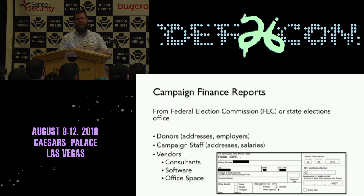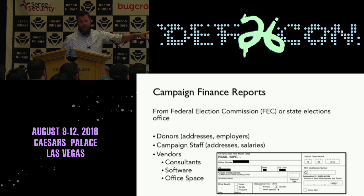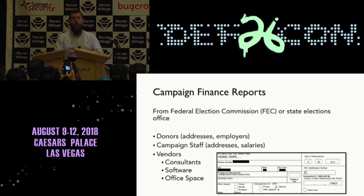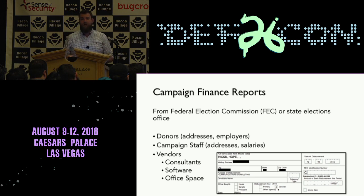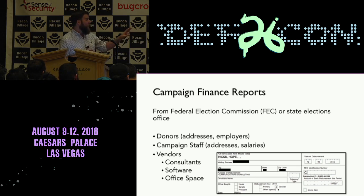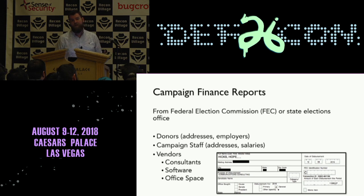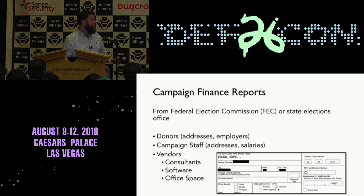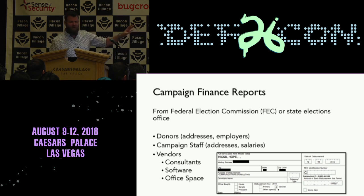Campaign finance reports: any candidate running for public office is going to have a campaign committee, which has to report every dollar coming in and out. You can go to the Federal Election Commission or the state elections office to get these records — almost every state has them online. Some even have really great search tools. The FEC has an API so you can pull this information very quickly. For an individual donating to a campaign, you're going to get a lot of great OSINT information just by looking at their donors. Every donor has their home address listed — some use a P.O. box, but most individuals will have their actual home address. They'll also have their employer and their occupation.